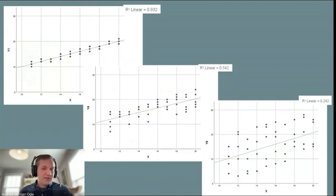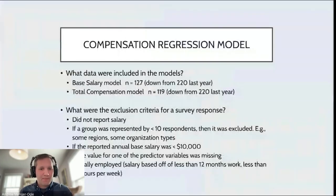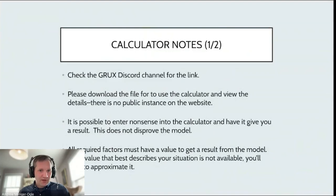For base salary the R-squared was 0.82, so 82 percent of variance explained. And then total comp was 86 percent down from previous years. You might remember this slide; this just kind of tells us for your gut intuition what the meaning of that is for the accuracy of the model. The model is the line, but then the dot would be the actual value of what somebody's salary or total comp would be. Here's the only thing new here: the N's. You can see this year I was looking at 127 down from 220. Total compensation also down quite a bit. The exclusion criteria for whether or not your survey was included in the model didn't change.